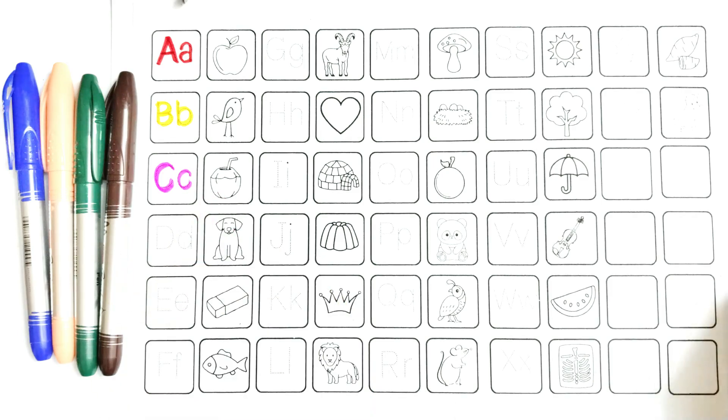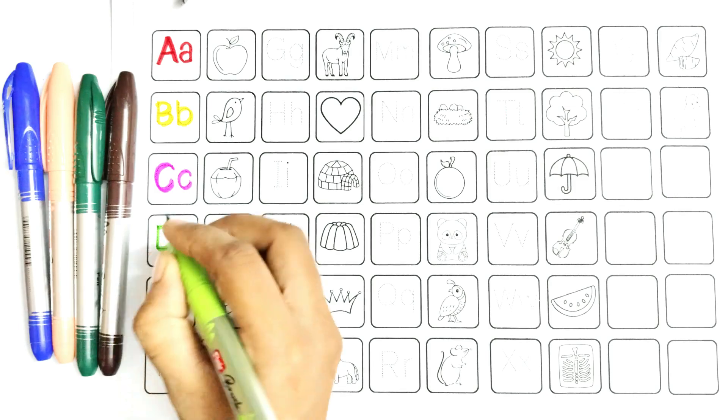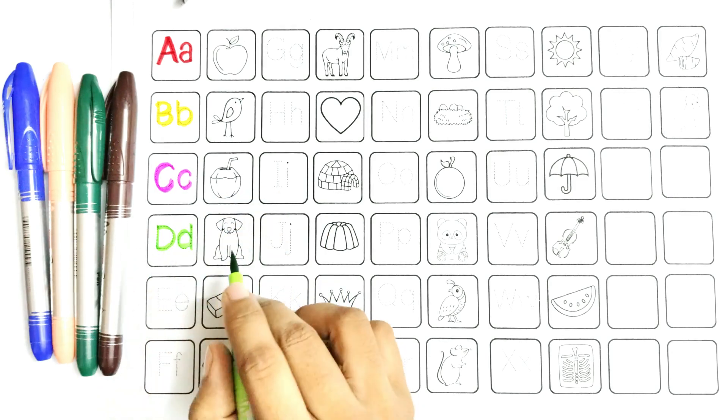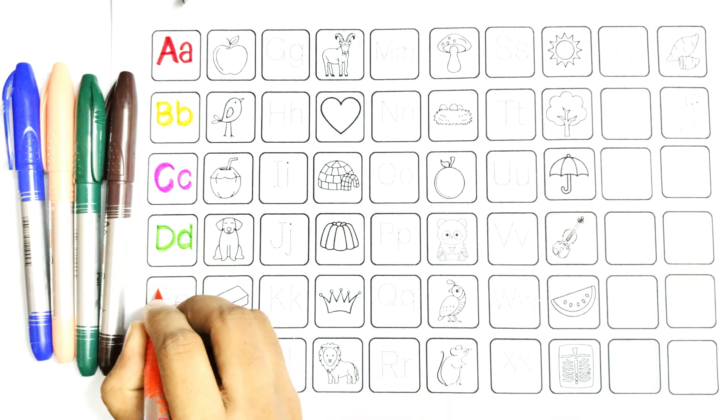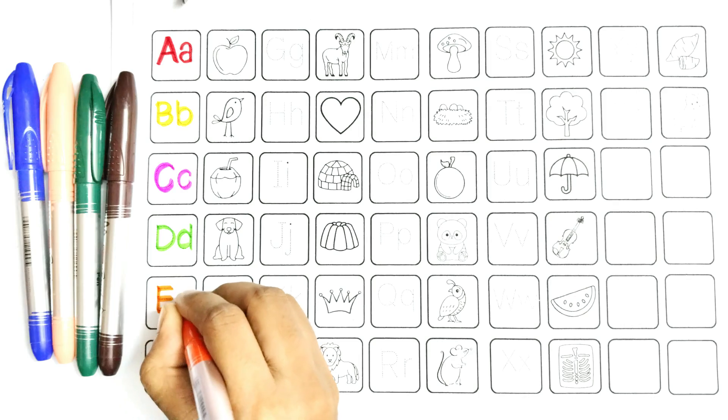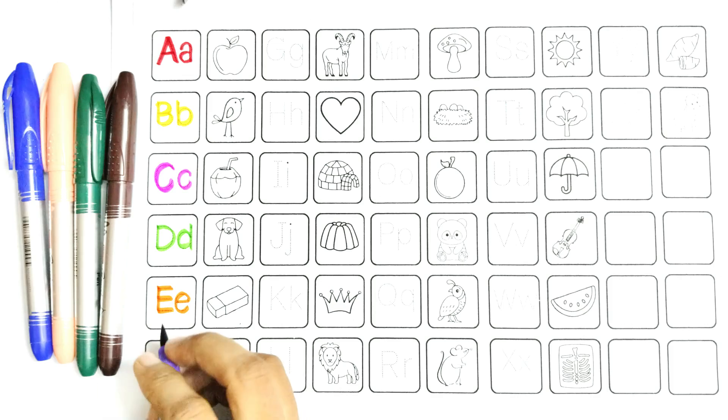D, say with me: D, D is for dog. E, say with me: E, E is for lizard.